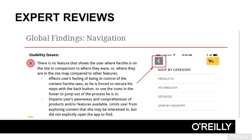An expert review, or heuristic review, is a comprehensive overview of key task flows and screens of your application or website. The review is done by anywhere from one to five usability experts, and issues are generally assessed against a series of basic usability principles and rated using a severity scale. An expert review is an important component of the overall UX process and provides a quick means of evaluating the usability of a system. It's also a good precursor to planning usability tests.